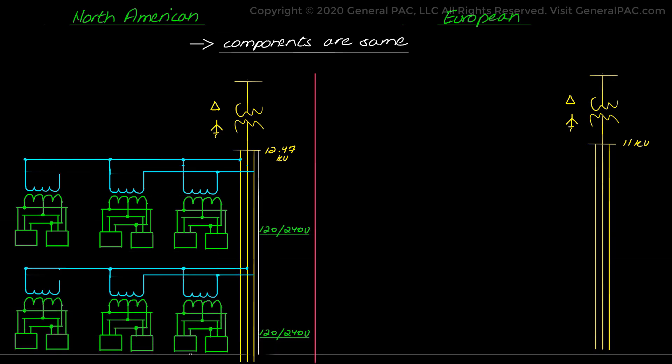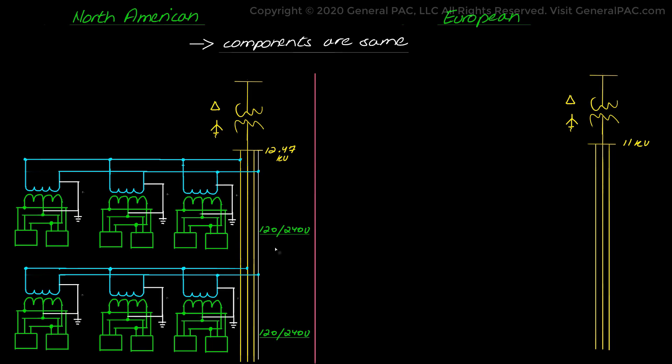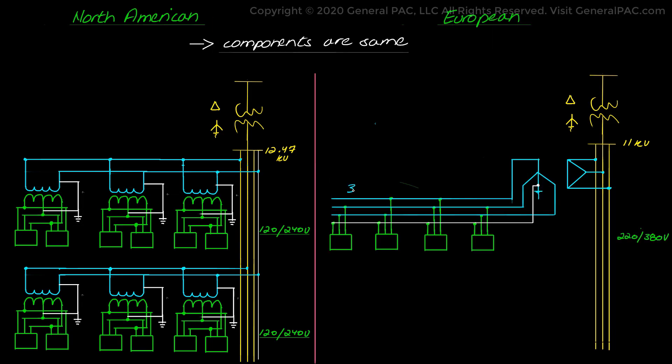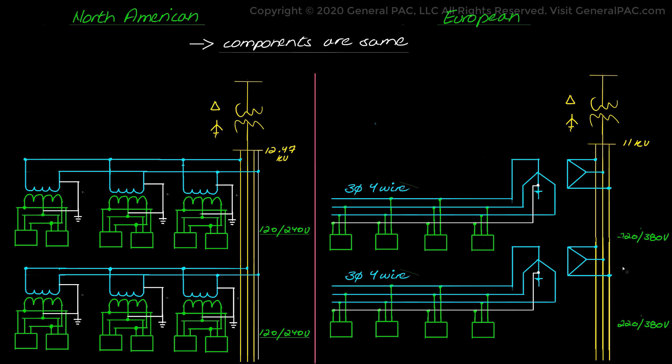The North American layout has three-phase four-wire primary, single-phase laterals, and split-phase distribution transformers. Voltage levels at the service mains is 120/240 volts. The European layout has three-phase three-wire primary, three-phase four-wire secondary, and three-phase distribution transformers. Voltage levels at the service mains are 230/400 volts.